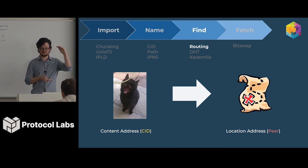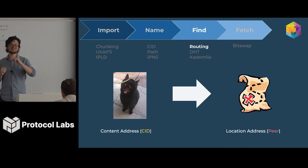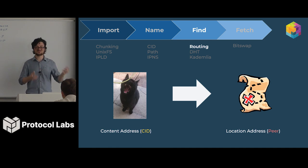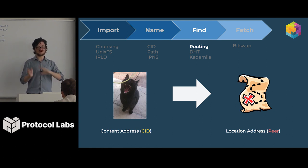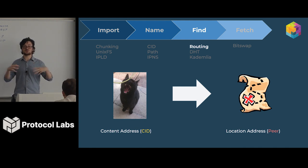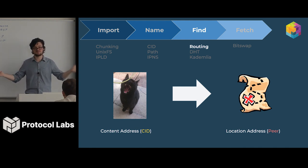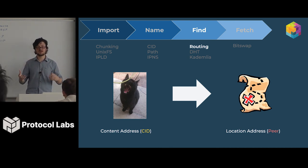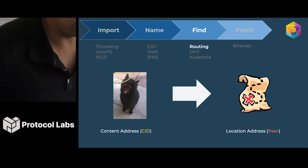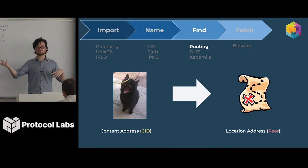Basically, we take a CID and then we have to turn it into a location address. We talked about how we don't want to use location addresses — well, that's not actually true. We actually have to use location addresses to find the content, but we start with a content address and use a routing system to find the set of peers that currently have the content we're looking for. Because we're using content addresses, this set can change, and it also means we don't have to trust these peers. We'll find peers that claim to have a file, fetch the file, and then verify they gave us the right file.